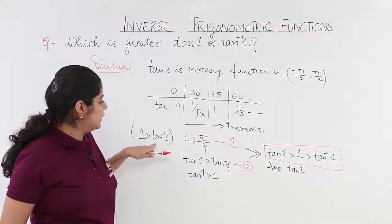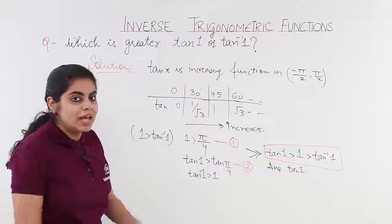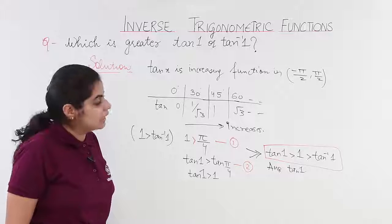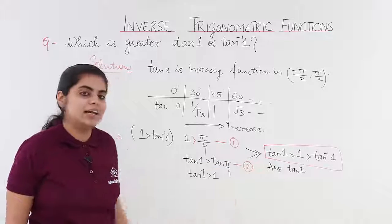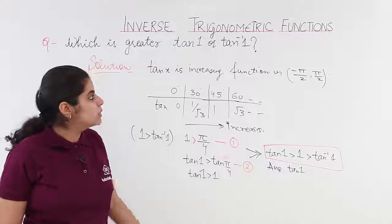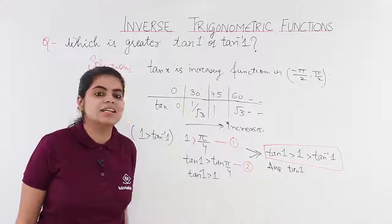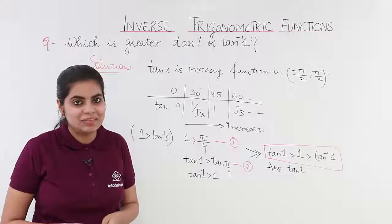So, comparing 1 and tan inverse 1, you place the values here. And finally, you have the comparison as tan 1 greater than 1 greater than tan inverse 1. And you were supposed to compare only 2 values. You compared and you got the answer as tan 1 is greater. And if you understand, you will see the alternatives.